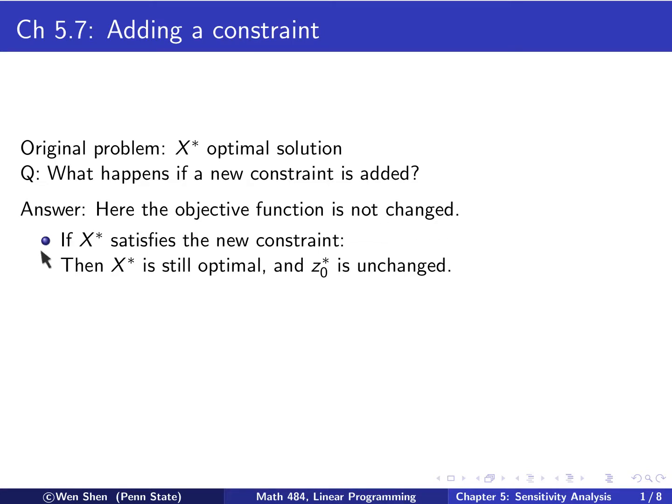So two situations can happen. First, the optimal solution X star satisfies the new constraint that you add. Then X star is still optimal, because we did not change the optimal objective function. And the optimal value is also unchanged. So that's the easy case. You just verify that, and then you conclude. Nothing changes.